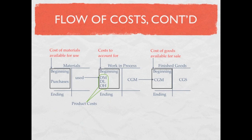Your direct materials plus your direct labor plus your overhead make up what is called product cost — you can also hear that called inventoriable cost or manufacturing costs. Another term to be familiar with is prime costs. Prime costs are made up of your direct materials plus your direct labor. They're called prime costs because they're direct costs — directly associated with the product.